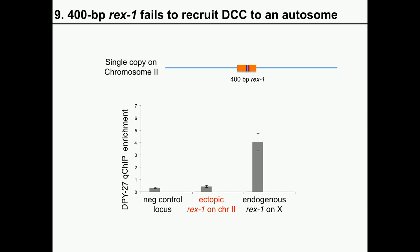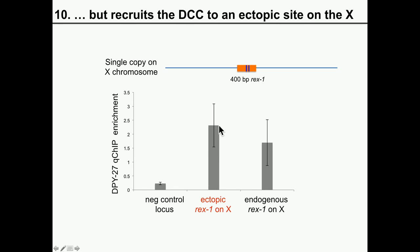We then asked: what if you take the same REX1 and insert it at an ectopic site on the X chromosome, where it normally doesn't bind to the DCC? Interestingly, if you put the same element on the X, it works just fine and is able to recruit the complex ectopically to the X chromosome. This data suggests that REX1 can work on the X but cannot work on the autosome.